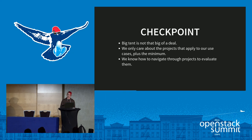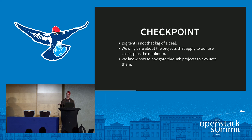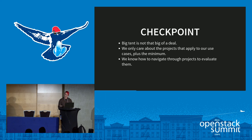As a checkpoint: the Big Tent is not really that big of a deal. I would like people to not really worry about that unless you're doing development or are interested in bleeding-edge projects. For the most part, use things like the Project Navigator to navigate to things that are ready for you. And if you're interested in trying out different projects that are just starting, try them out and give feedback — that's what's going to allow them to get better. Really only care about what exactly you want to do with your OpenStack cloud, and use these resources to navigate through the different projects and use cases.